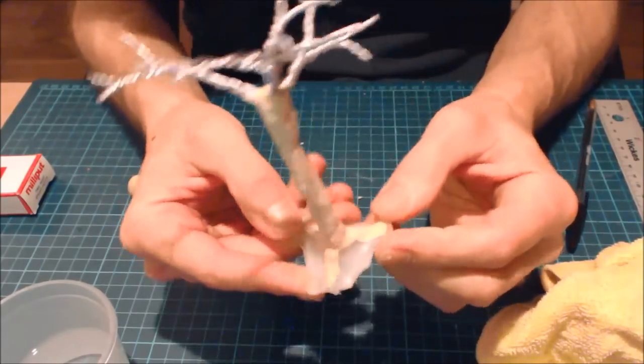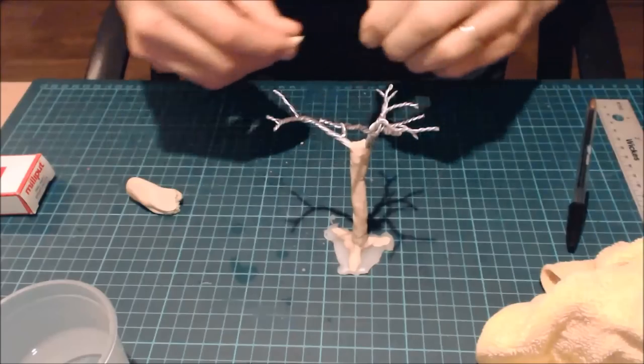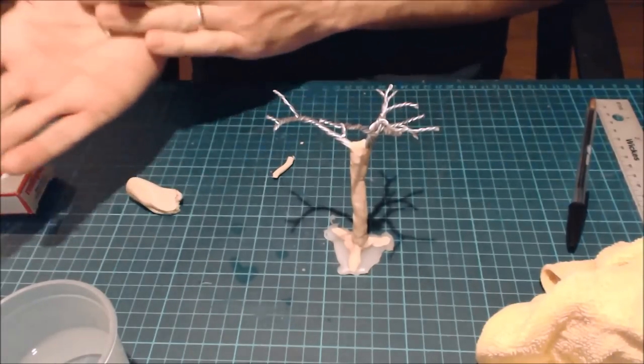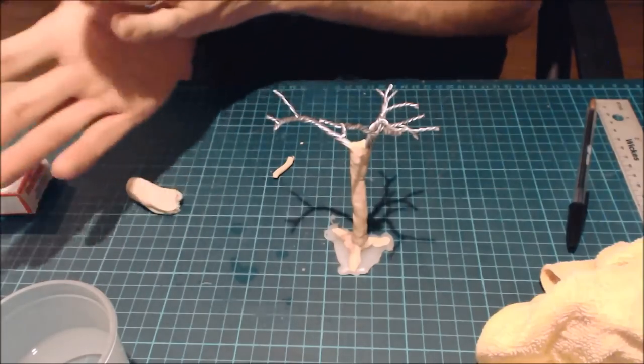There's the basic trunk covered and the roots. Next thing to do is work on the arms. Normally I would let this dry and do the trunk and sculpt it, then do the arms separately, but for this one we'll just go straight for it.